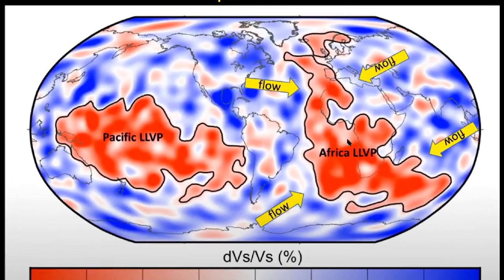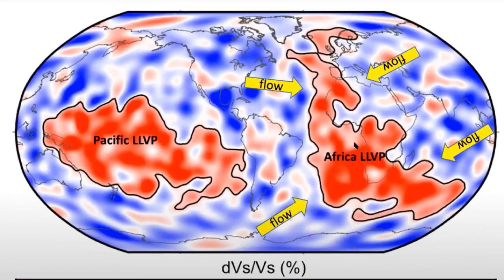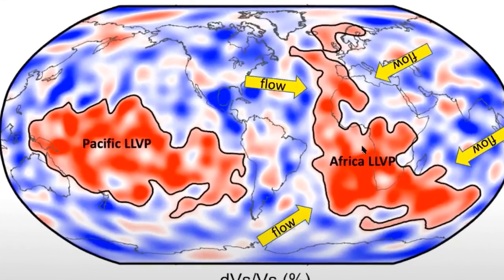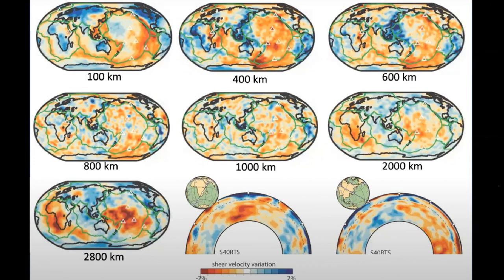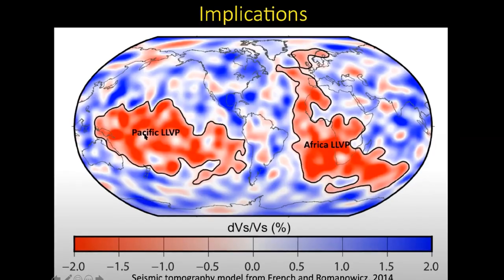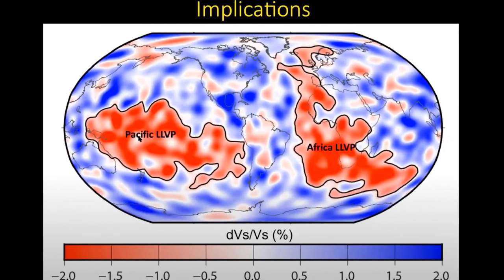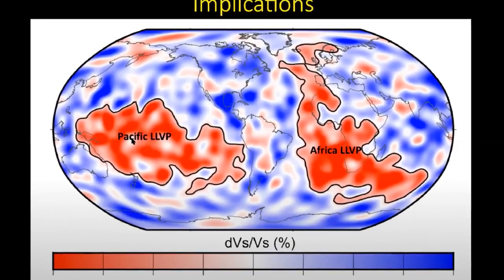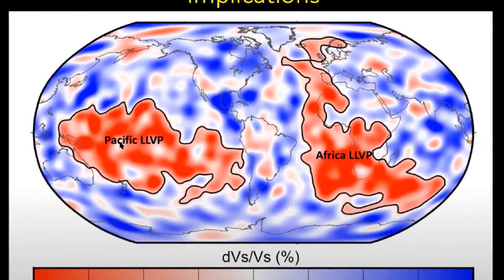They exhaustively tested the effects of critical factors that may affect the height of the blobs, including the volume of the blobs and the contrasts of density and viscosity of the blobs compared with their surroundings. They found that to explain the significant differences of height between the two blobs, the one under the African continent must be of a lower density than that of the blob under the Pacific Ocean,